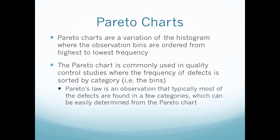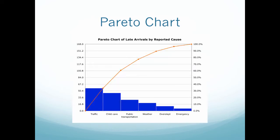So let's see what these look like. Here's an example of a Pareto chart. Once again, they're a variation of a histogram where the observation bins are ordered from highest to lowest frequency, meaning the bins with the highest observations are put first and then in descending order.